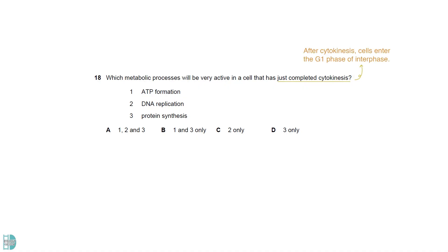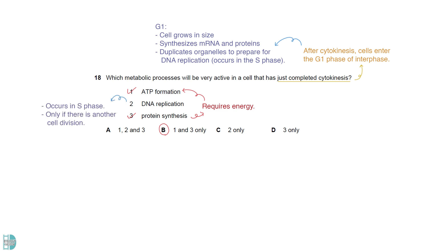Right after cytokinesis, cells enter the G1 phase of interphase. During G1, the cell grows in size, synthesizes mRNA and proteins, and duplicates organelles in preparation for DNA replication in the subsequent S phase. With that said, protein synthesis will occur. And since these processes require energy, ATP is produced too. DNA replication will only occur when the cell enters S phase if the cell needs to divide again.